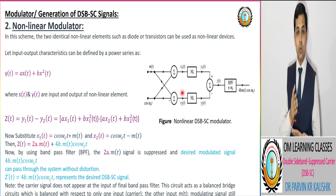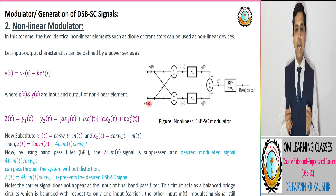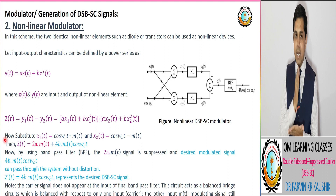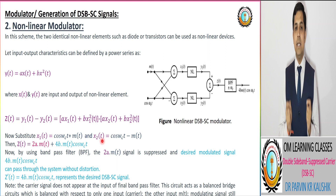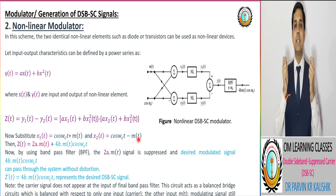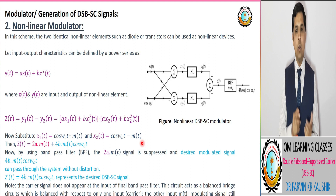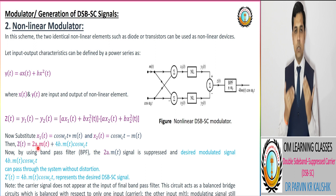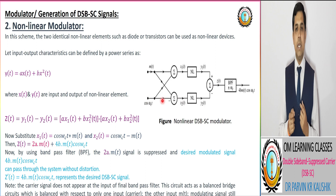In the DSB non-linear modulator, the modulating signal is added to the carrier signal for x1(t) and subtracted from the carrier signal for x2(t). Corresponding to x1(t) and x2(t), we get the output equation Z(t) = 2A·m(t) + 4B·m(t)·cos(ωC·t). Here we have two terms: the first term corresponds to the modulating signal and the second term corresponds to the DSB-SC signal.